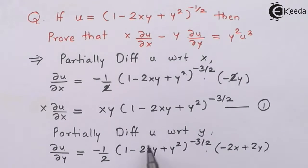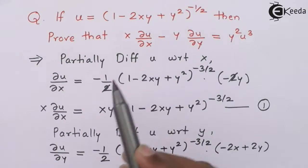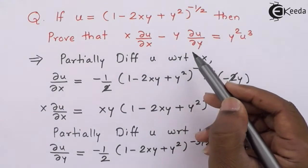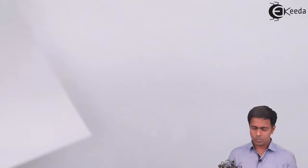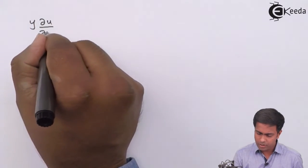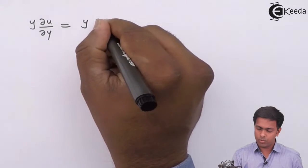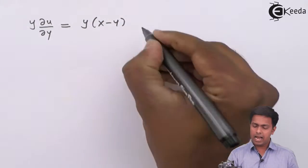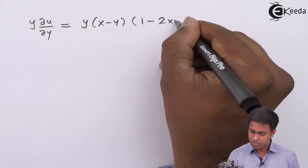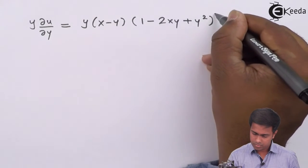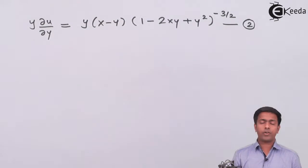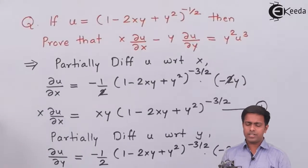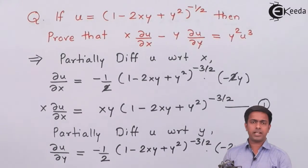We also have to multiply this term with y. Multiplying by y on the left-hand side, we get y ∂u/∂y equal to y times (x minus y) into (1 minus 2xy plus y squared) raised to negative 3/2. I call this equation number 2. We now have the values of both terms in equations 1 and 2, and we will subtract them to get the answer.